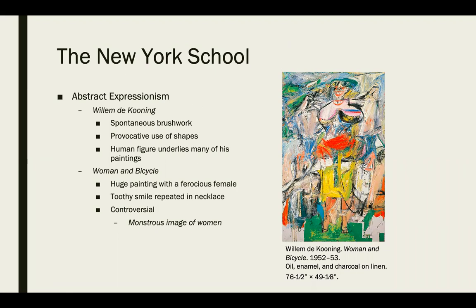Welcome to part two. Let's finish up abstract expressionism. William de Kooning is another abstract expressionist artist, but he's not quite as non-representational as Jackson Pollock. He still uses very spontaneous brushwork and provocative use of shapes, with a human figure underlying many of his paintings — like 'Woman and Bicycle.' The application of paint is heavy and messy, and the depiction of the figure is intentionally raw, capturing feeling and emotion through the nature of paint itself.